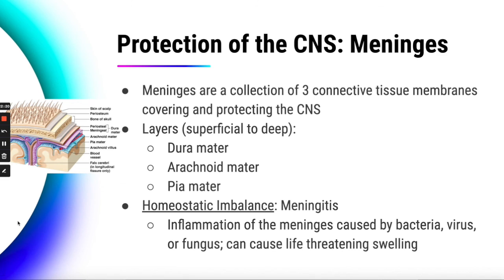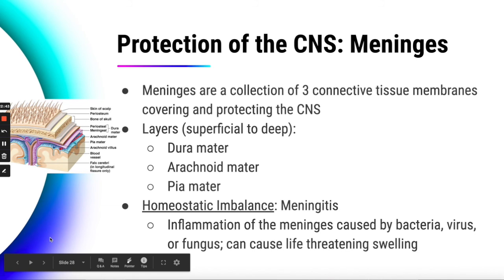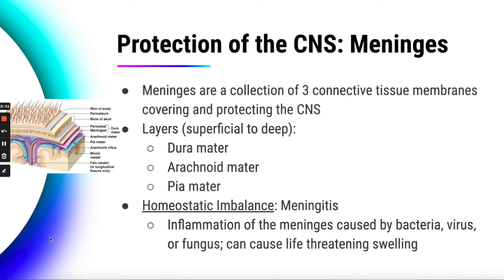There are protective features in place for the central nervous system. The meninges are a collection of three connective tissue membranes that cover the brain and spinal cord. The three layers from superficial to deep are the dura mater, arachnoid mater, and pia mater. A homeostatic imbalance involving the meninges is meningitis — inflammation of those protective coverings — caused by bacteria, a virus, or a fungus. Fungal meningitis is more rare but much harder to treat. This can be fatal because if the meninges swell too much, it puts pressure on the brain and spinal cord.